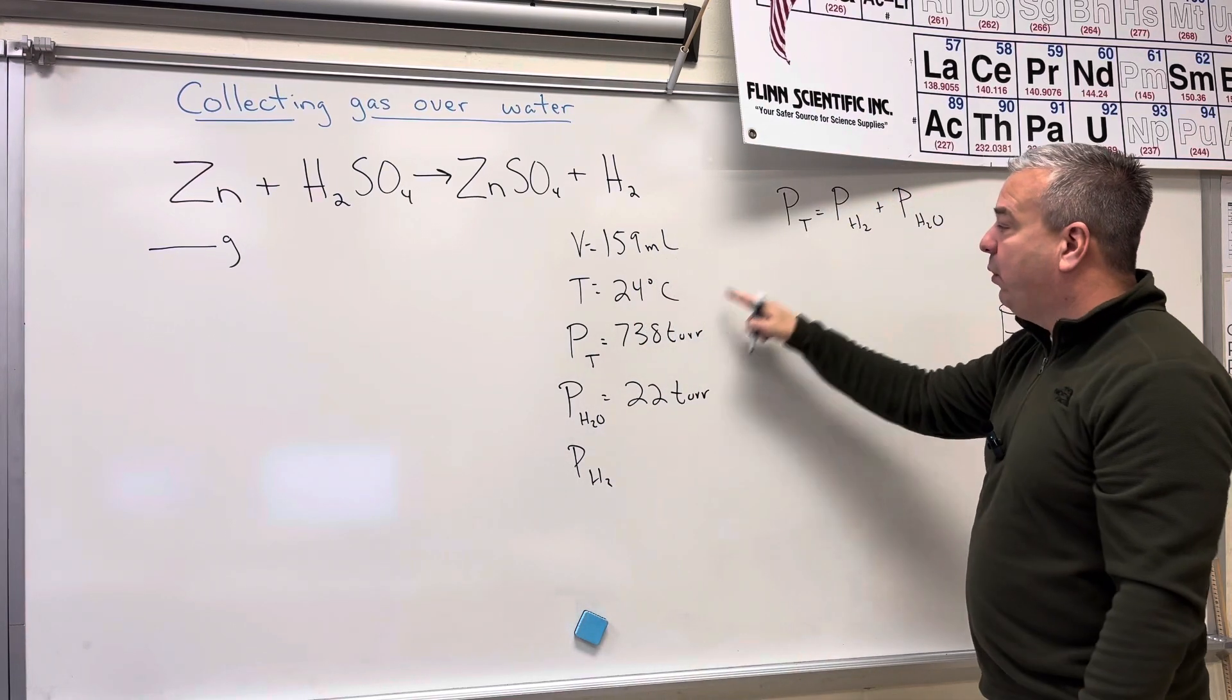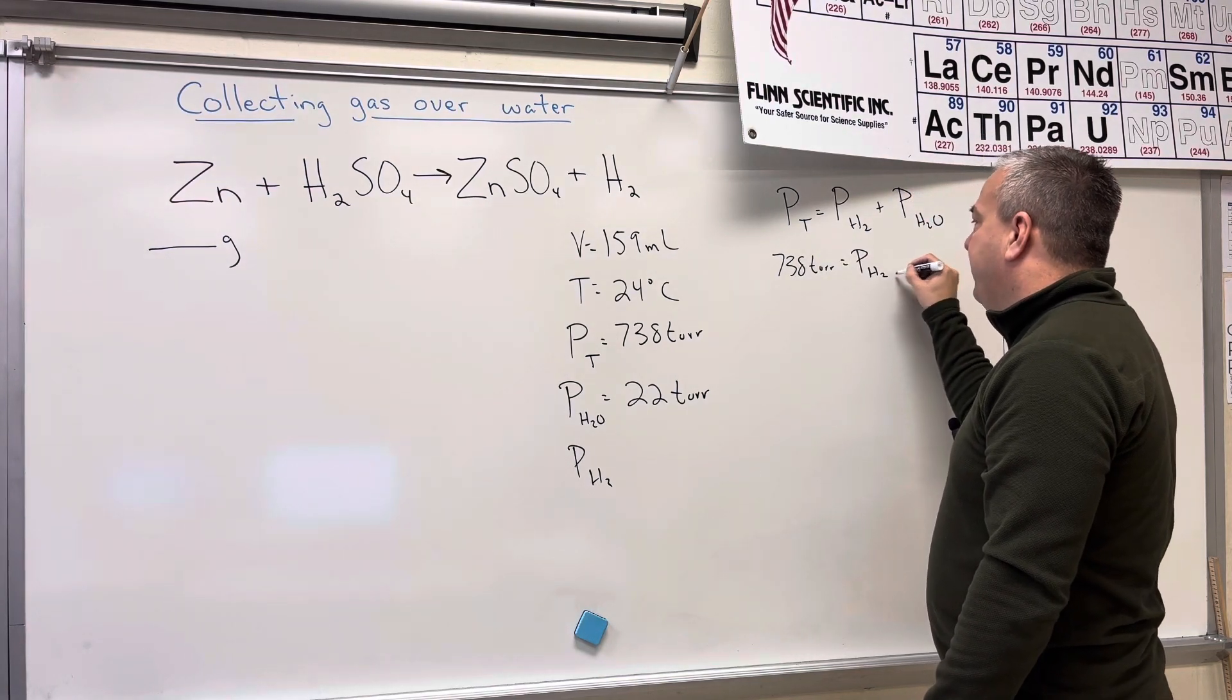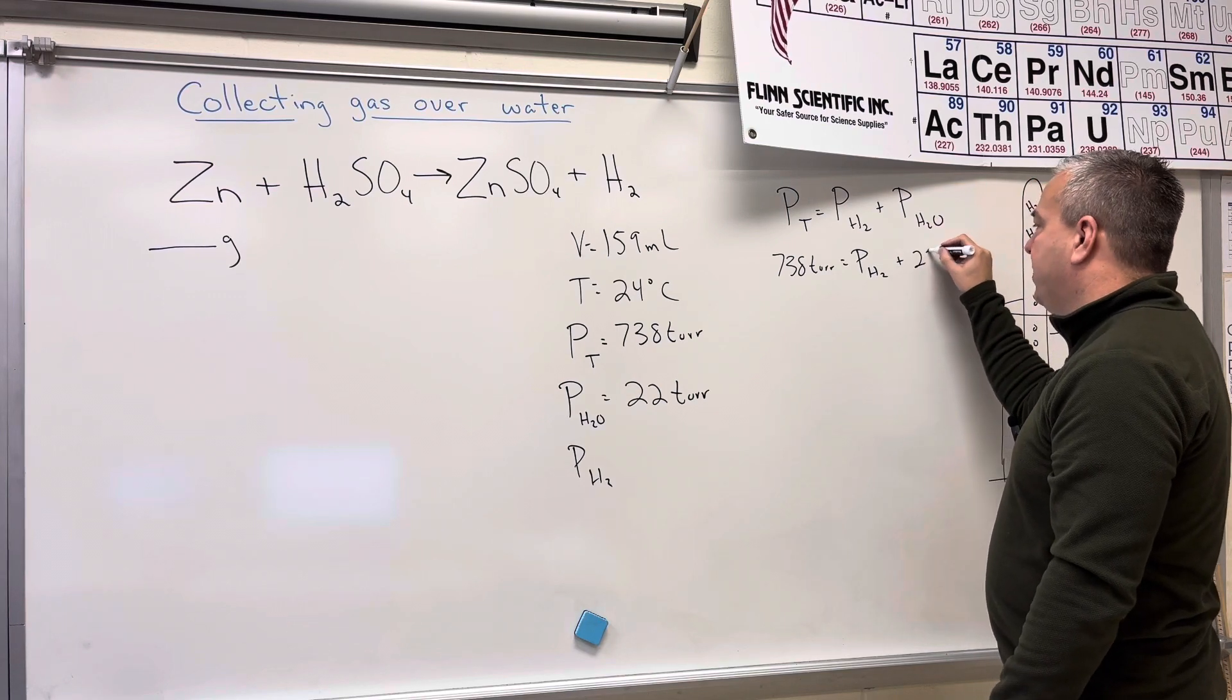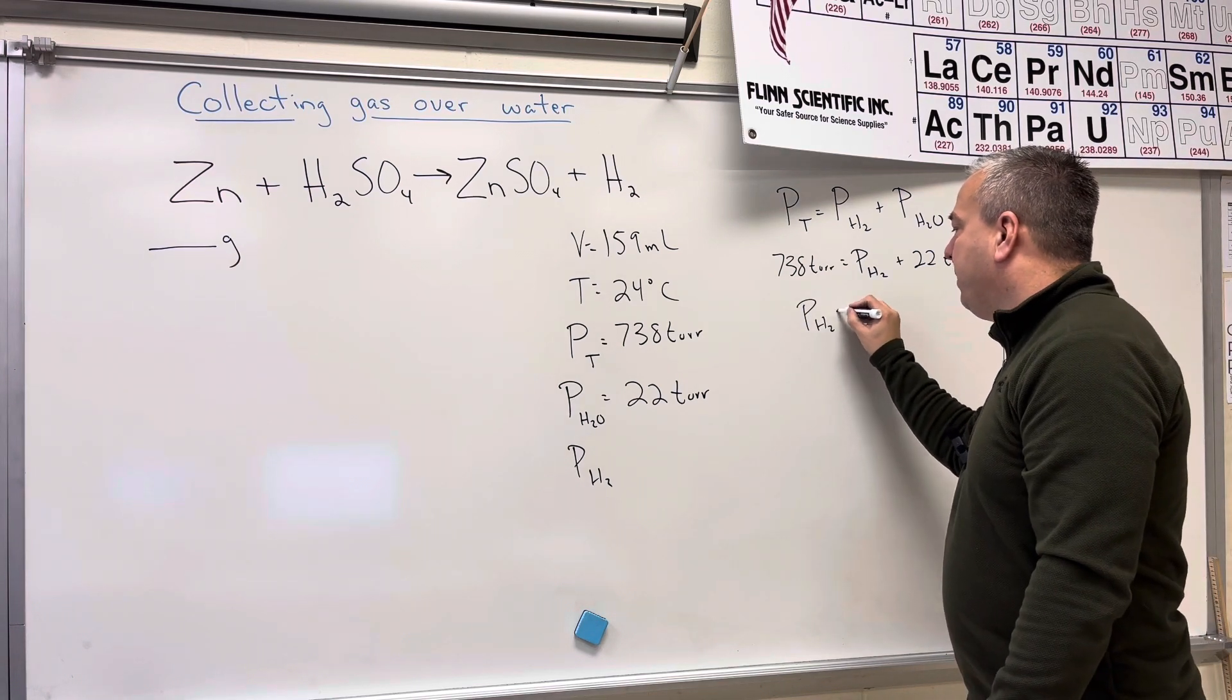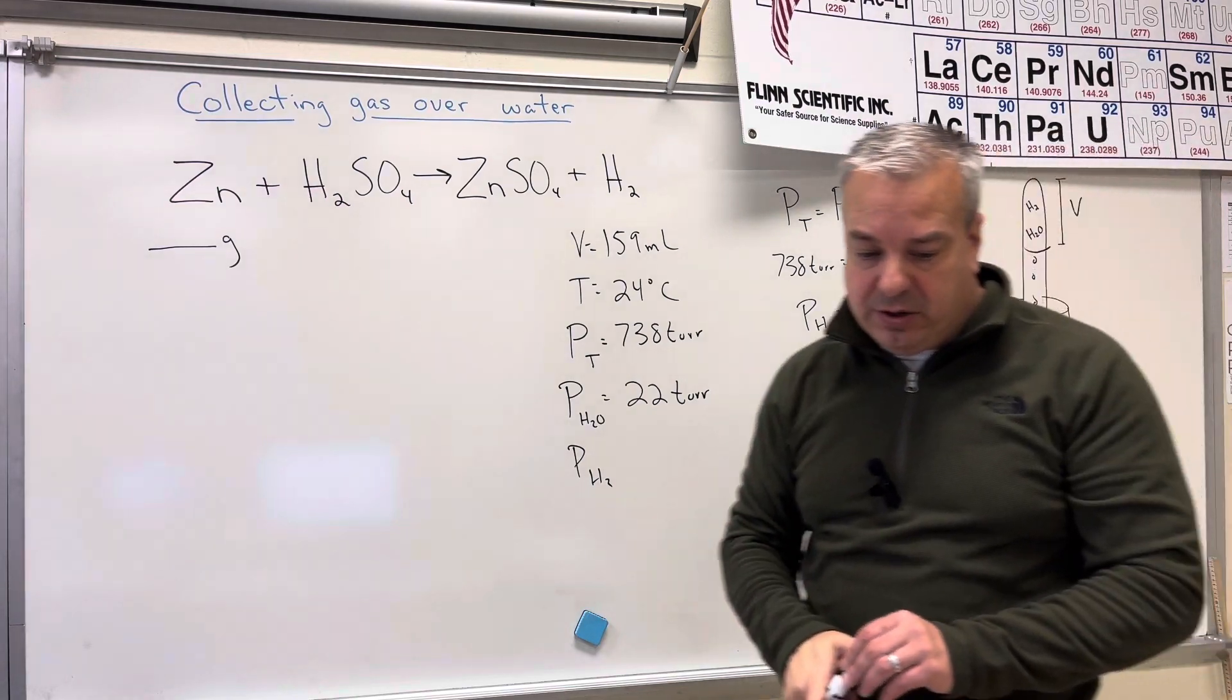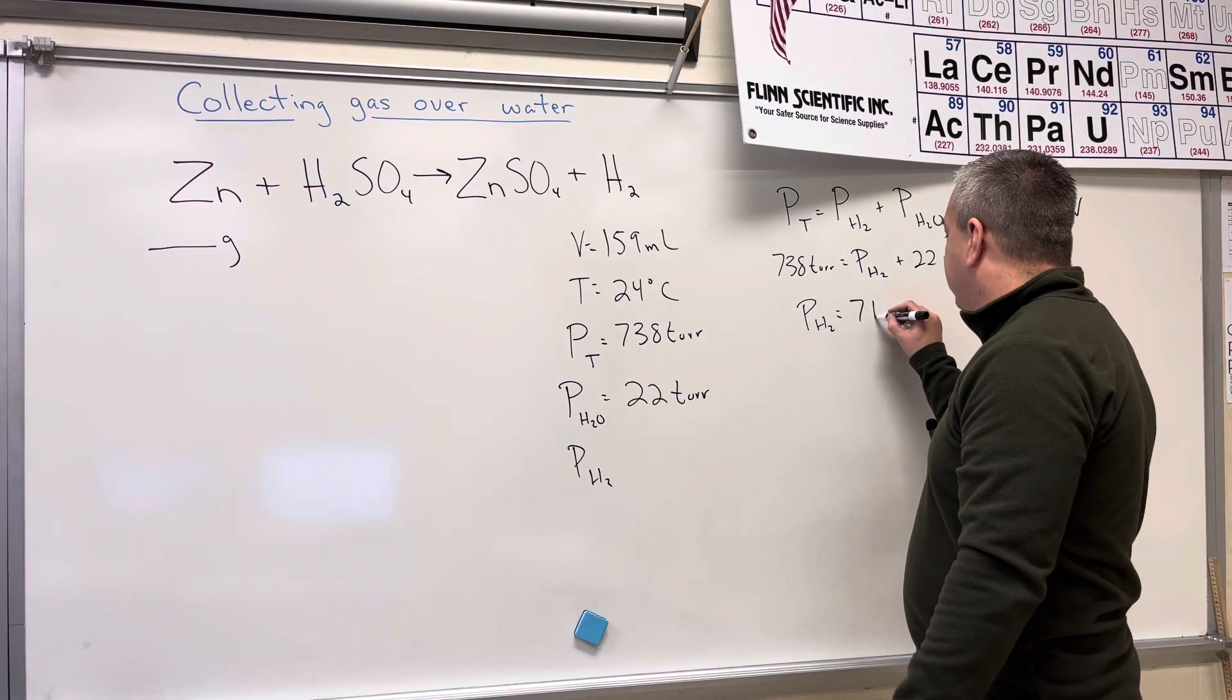So let's go ahead and figure out the pressure of the hydrogen first. So I have the total pressure, which is 738 torr. I want to figure out the pressure of the hydrogen, and I actually have the water vapor pressure, which is going to be 22 torr. So if I want the pressure of just the hydrogen, what I'm going to do is take 738 and subtract away 22. And when I do that, I get a pressure of 716 torr.